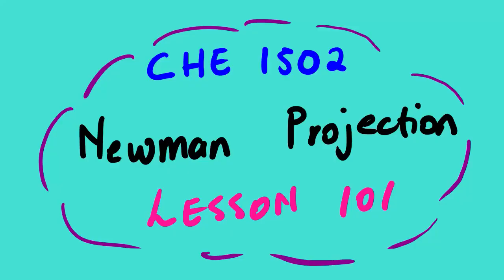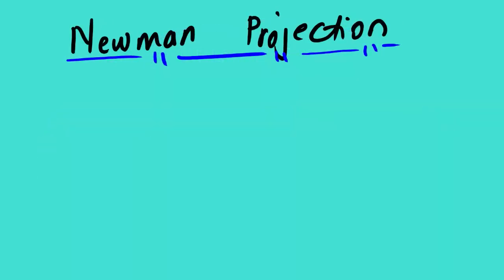Today's lesson we are going to look at chemistry 1502. The topic for today is Newman projection - this is lesson 101, the basics. Let us start: Newman projection is one of the ways to represent the structure of an organic molecule. So far we know the line structure, the Lewis dot diagram, the condensed formula, and the molecular formula.